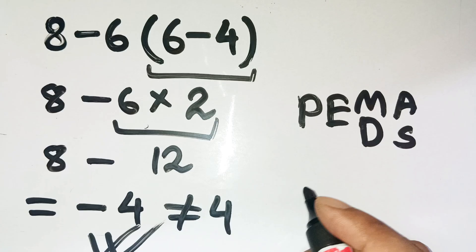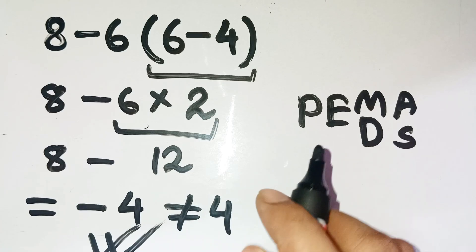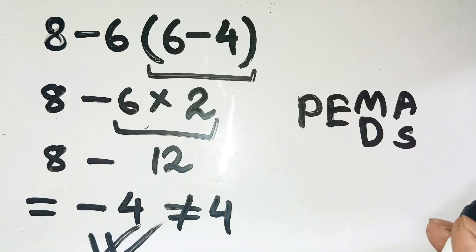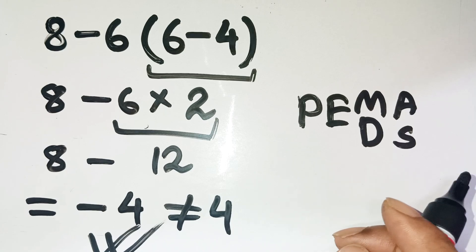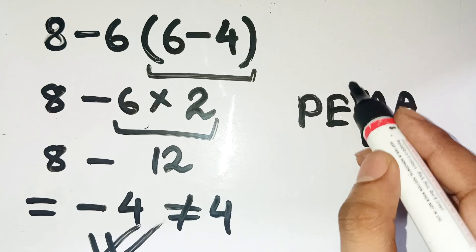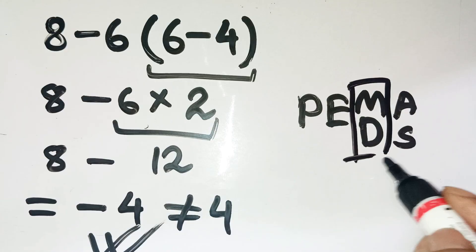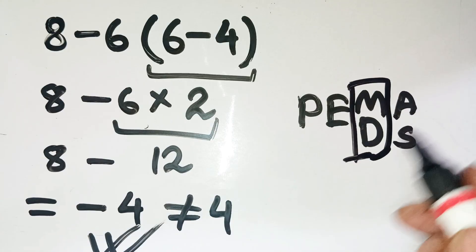Your brain sees that bracket and instantly wants to multiply after subtracting first because we tend to read from left to right. But PEMDAS reminds us multiplication and division come before addition and subtraction. And that tiny rule completely changes the game.